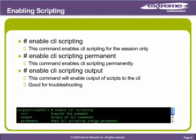Enabling scripting. You have a few commands here: enable CLI scripting, enable CLI scripting permanent, and enable CLI scripting output. There is an image showing what these commands look like in the CLI, with output and permanent options displayed.